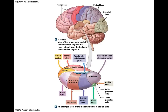The ventral nuclei have three sections: one receives general sensory input, one receives information from the cerebellum, and one receives information from the basal nuclei. Things like touch, pressure, pain, temperature, and proprioception — all the general senses — are received in the ventral nuclei.